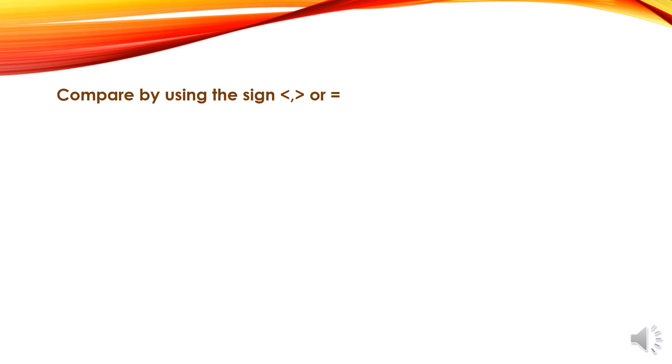How can we compare by using the sign smaller than, greater than, or equal? For example, if I have 7 and 2 over 9, 7 and 4 over 9. How can we compare them?